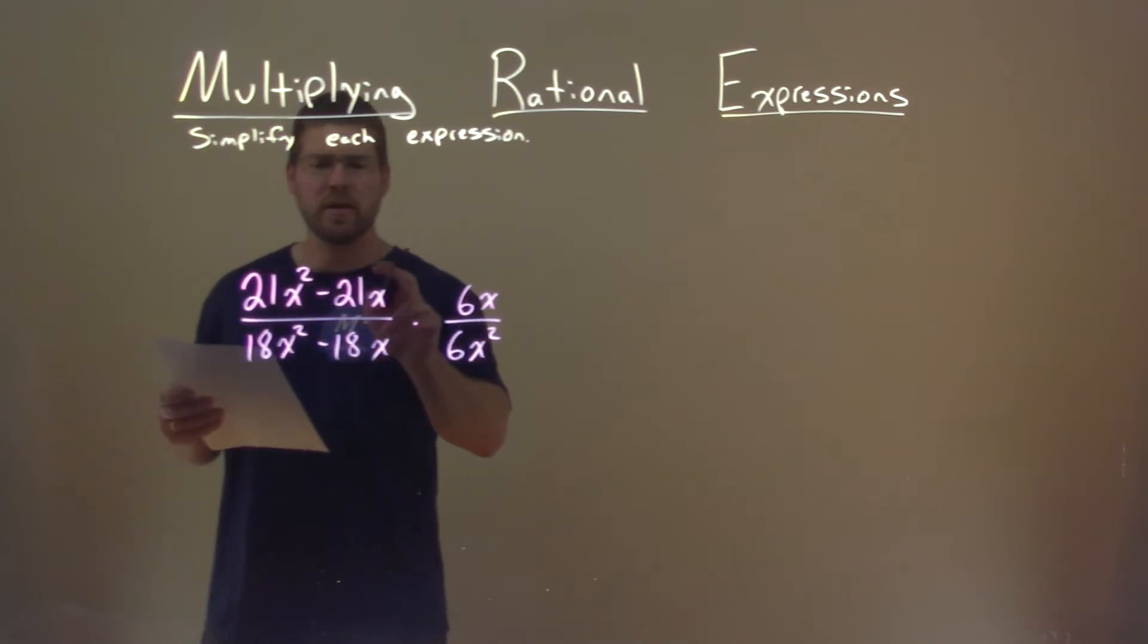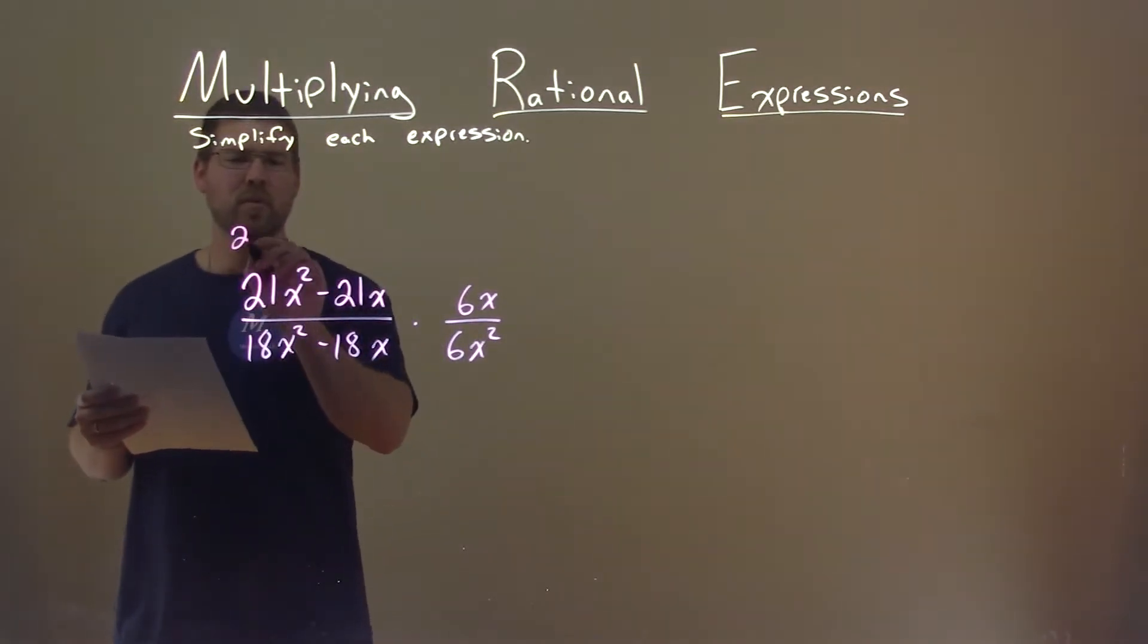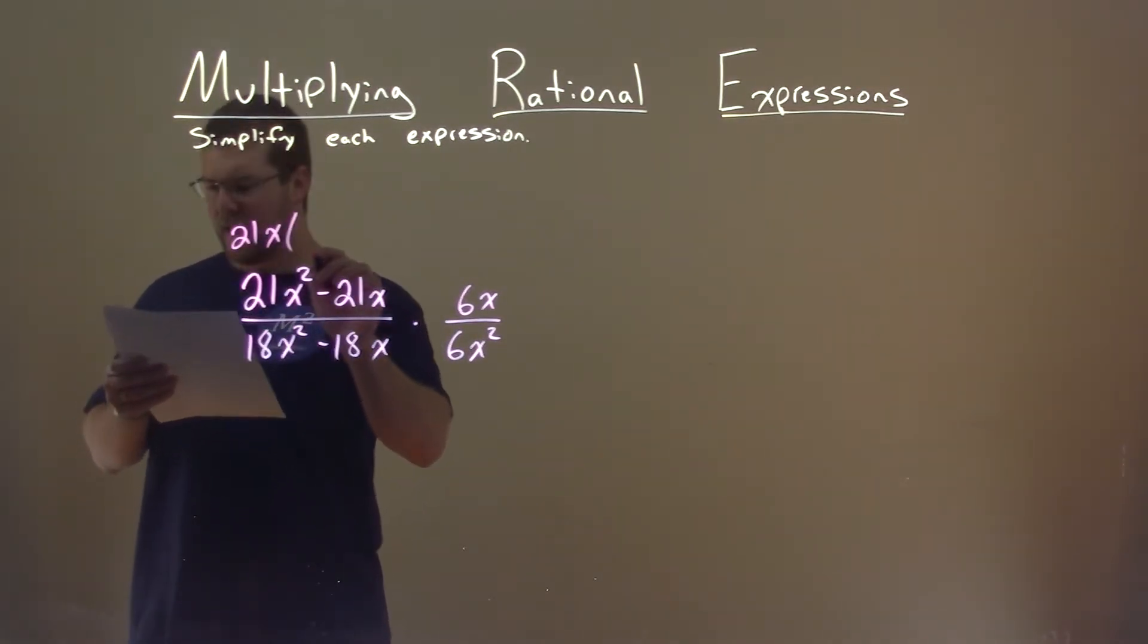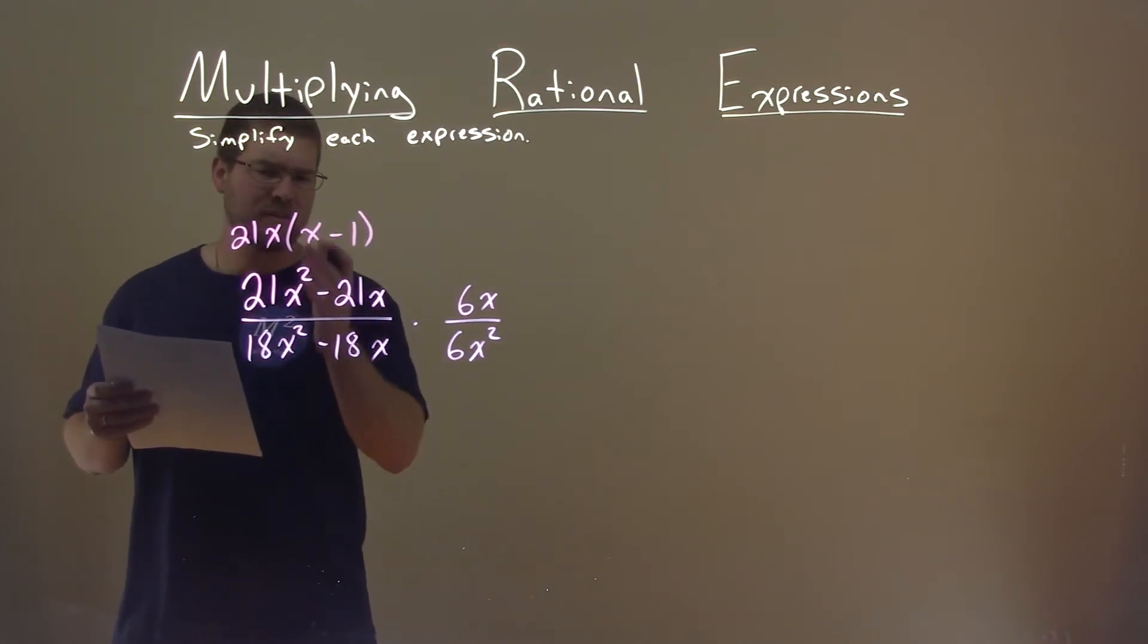In the numerator here, I can see I can pull out a 21 and an x, and I'm left with just x minus 1. So, since I simplified or factored that part, I'm going to cross that part out.